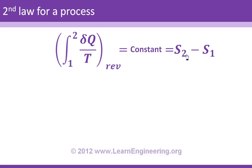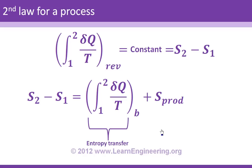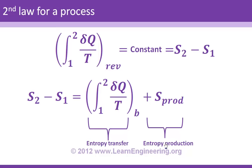Entropy is a property only if the process is completely reversible. For an irreversible process, the entropy difference S₂ − S₁ equals two quantities: entropy transfer (due to heat transfer) plus entropy production (due to irreversibilities). The entropy transfer and total entropy change can be positive or negative, but entropy production is always positive. This is the second law for an irreversible process.